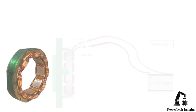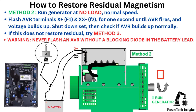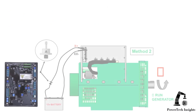Method 2: Run the generator at no-load, normal speed. Flash AVR terminals X-plus and XX-negative for 1 second until the AVR fires and voltage builds up. Shut down the set, then check if the AVR builds up normally. If this does not restore residual, try Method 3. Warning: never flash an AVR without a blocking diode in the battery lead.